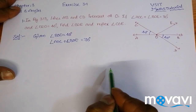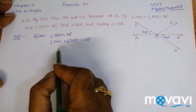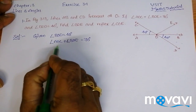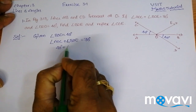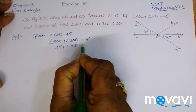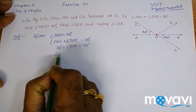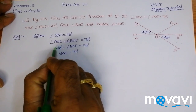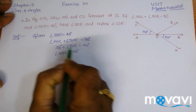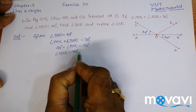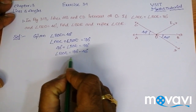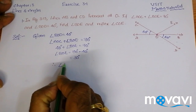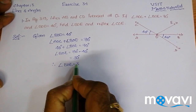So what we can do now is, in place of AOC, we can write AOC is equal to 40 degrees. So we can write: 40 degrees plus angle BOE is equal to 70 degrees. Angle BOE will be equal to 70 minus 40 degrees, which is equal to 30 degrees. Therefore, angle BOE is equal to 30 degrees.